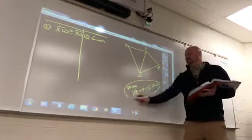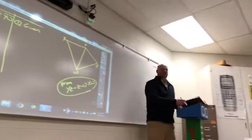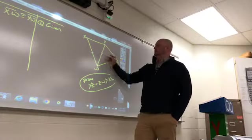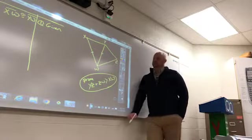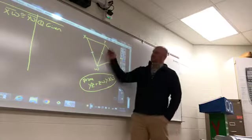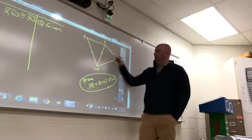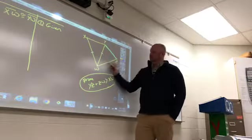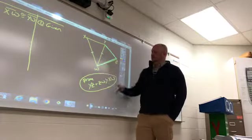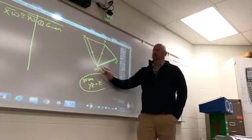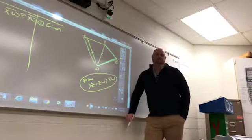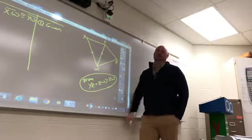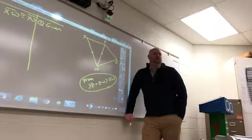Okay, so here's our goal. We are given that XW is congruent to YW. We want to prove that YZ, this side here, plus ZW, this side here, has to be bigger than this side over here. All right.